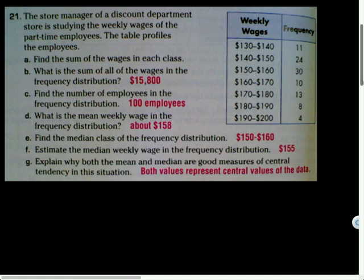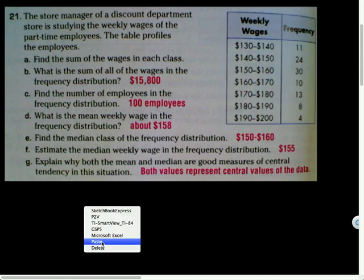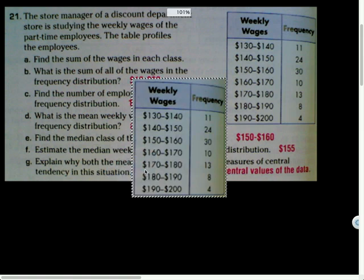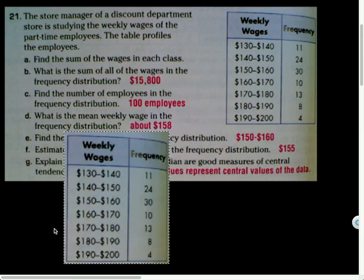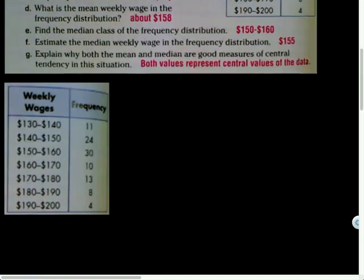So let's look at this. It says find the sum of the wages in each class. Let me actually snapshot that. So what I would do here to calculate that is, how much did we end up paying these people? Well, I would do 11 times 135, and that's 1485.